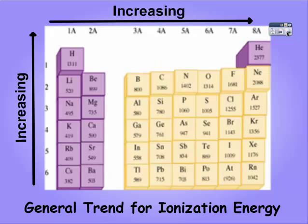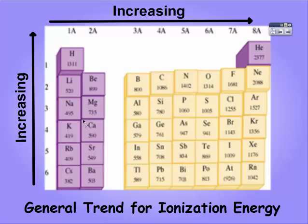The general trend for ionization energy is it increases as you go up and to the right on the periodic table. Nonmetals have the highest ionization energy, therefore they don't lose electrons very easily. Metals are going to lose electrons more easily because they have a lower ionization energy.